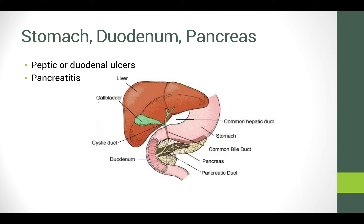The general concept with reflux in the esophagus, ulcers, and pancreatitis is that we have organs comprised of different types of epithelium and tissues that are getting inflamed — due to acid secretion, infection, obstruction, or a variety of other causes. They're all going to be presenting with abdominal pain, so it's really important to consider all of these things when someone comes in with belly pain.